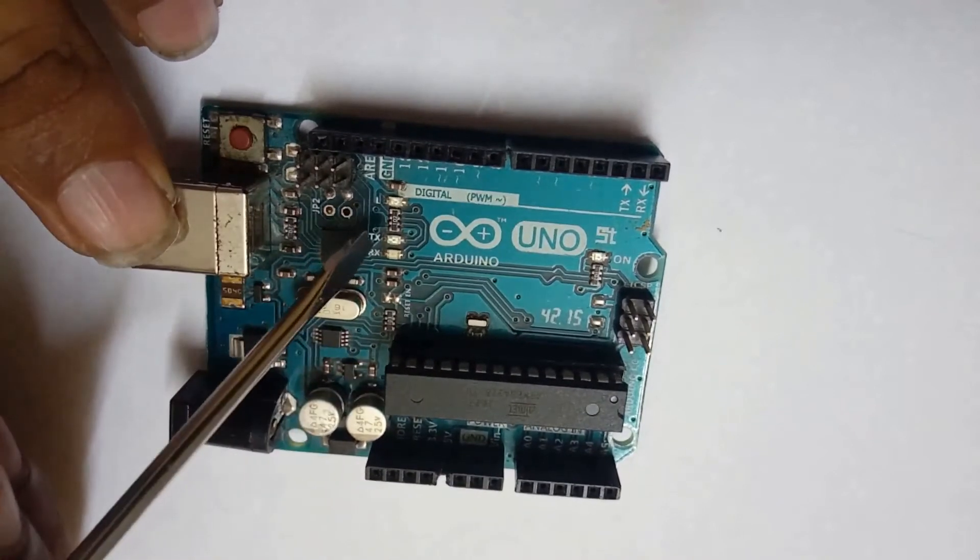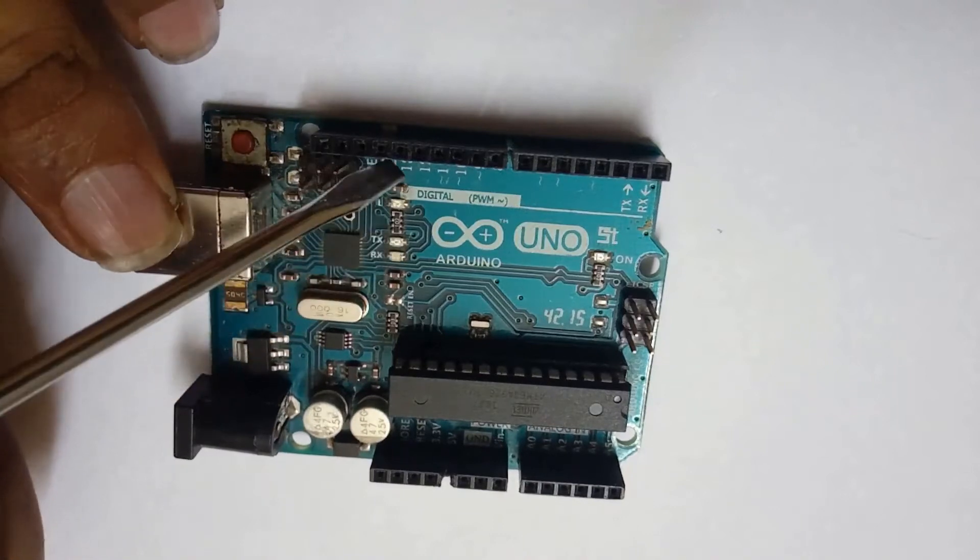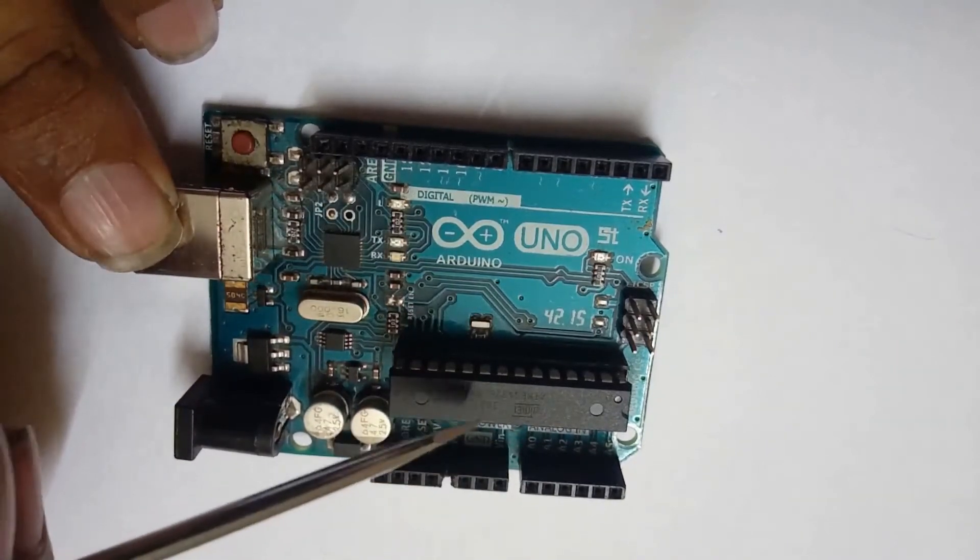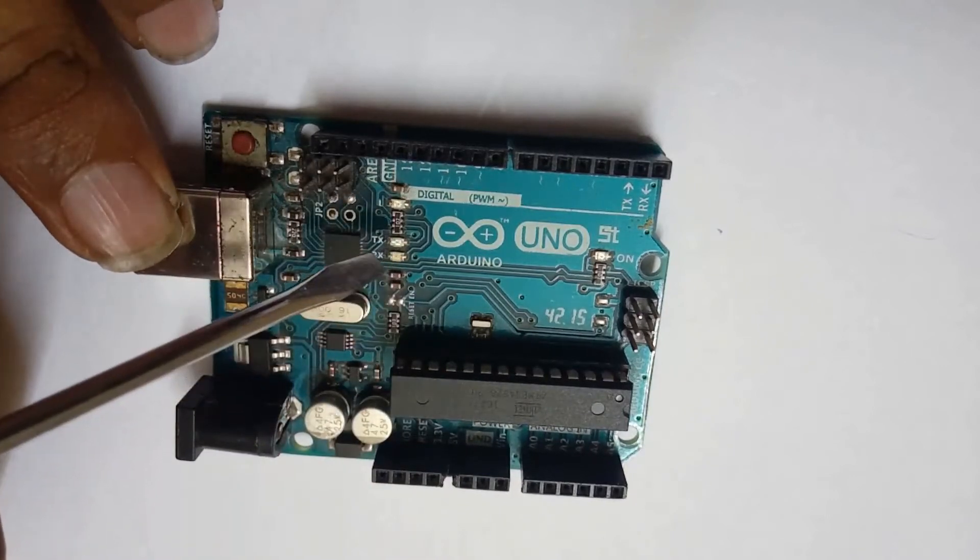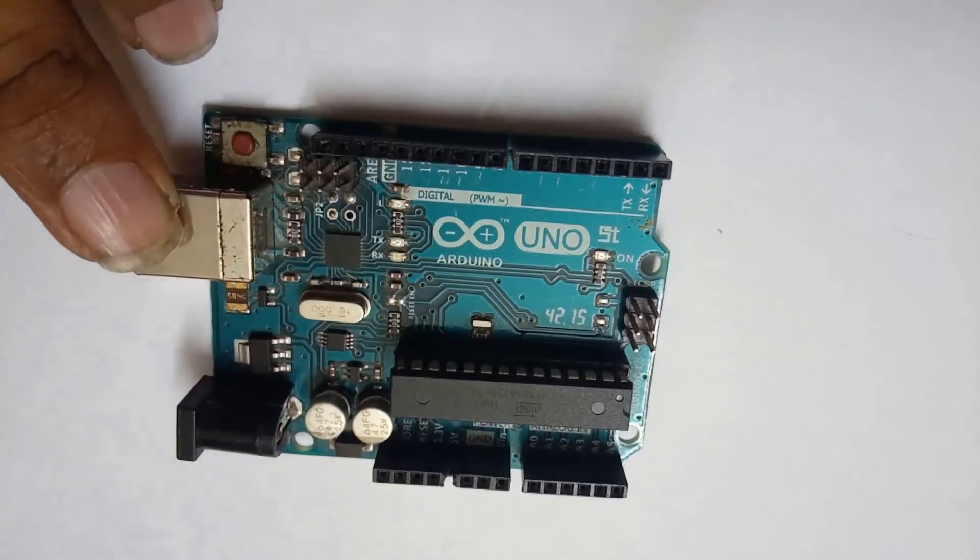This is the onboard LED. Usually onboard LED is connected to pin 13. If you program this Arduino board to blink this LED, you have to write digital pin 13, output for digital pin 13.